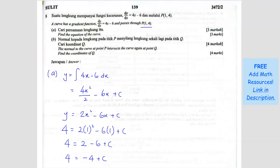Question B. The normal to the curve at point P intersects the curve again at point Q. So you want to find coordinate Q. When they ask you to find the intersect, that means you need to get the equation of that normal line, and then do simultaneous with the curve equation we got from Question A. So the first step is you need to find the equation of the normal.